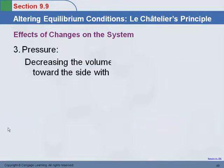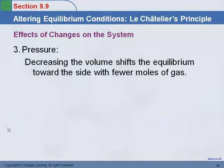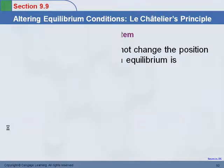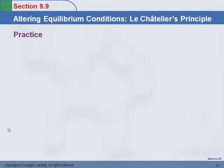Regarding pressure: decreasing the volume of a system shifts equilibrium toward the side with fewer moles of gas, since there's less space. Adding a catalyst does not change the position of equilibrium — it just means equilibrium is reached faster.